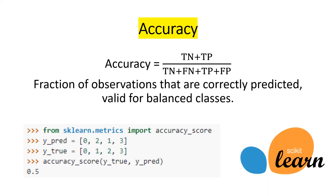We start with accuracy. Accuracy is the fraction of observations that are correctly predicted, and it is valid for balanced classes. For unbalanced class distributions we use another metric. Accuracy gives us the correct answers: it is the True Negative plus the True Positive divided by the sum of all outcomes — True Negative plus False Negative plus True Positive plus False Positive. We can use scikit-learn by importing the accuracy score to compare the true values and the predicted values.